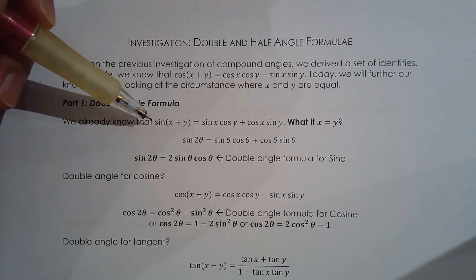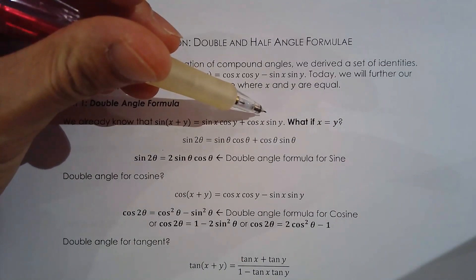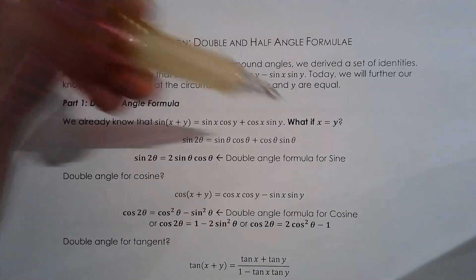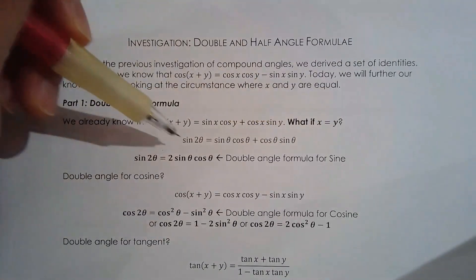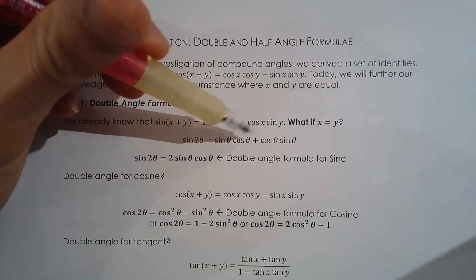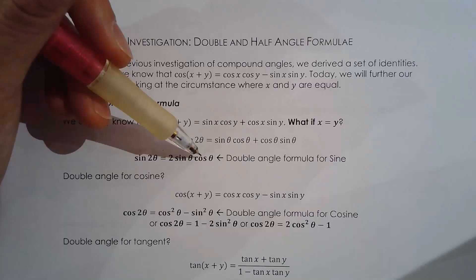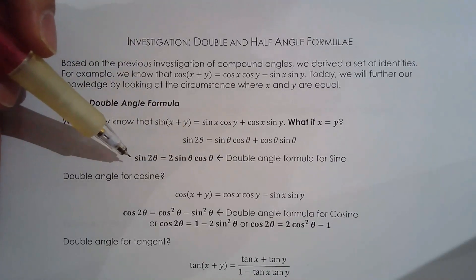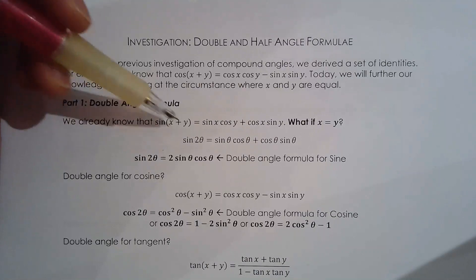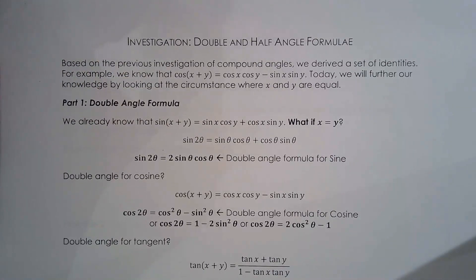If sine of (x + y) equals sinx·cosy + cosx·siny, what happens if the two angles being added are the same — if x equals y? Replacing x and y with θ gives sinθ·cosθ + cosθ·sinθ. Since sinθ·cosθ equals cosθ·sinθ, this simplifies to 2sinθcosθ. That's how we derive the double angle formula for sine — it's the addition formula for sine applied to the special case where both angles are the same, which is why it's called the double angle formula.